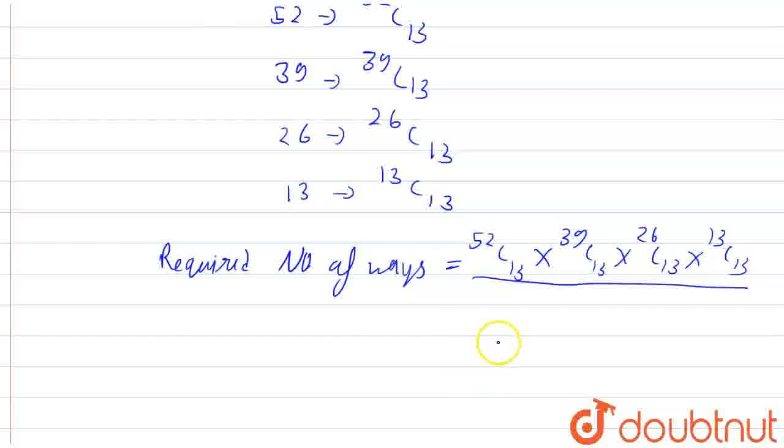On solving this, we get 52 factorial divided by (13 factorial) raised to the power 4 times 4 factorial. And that is our answer for this question.